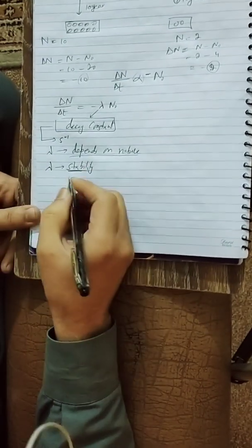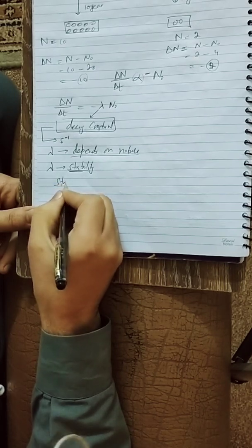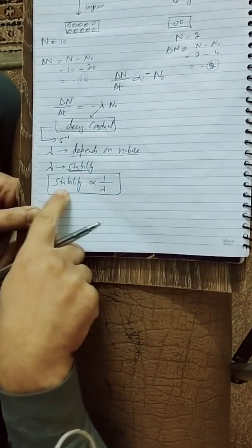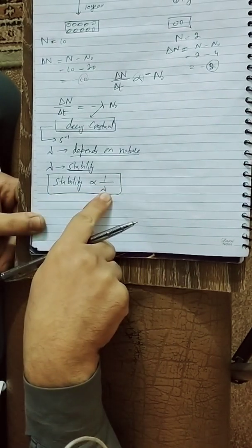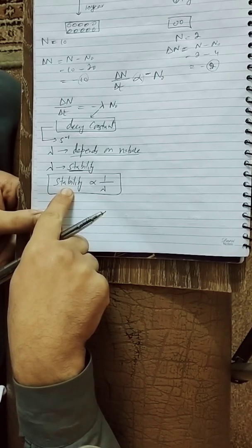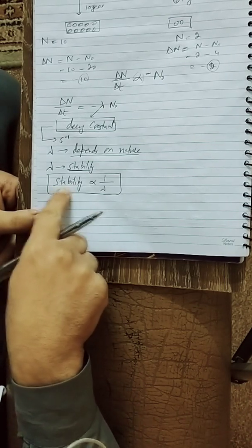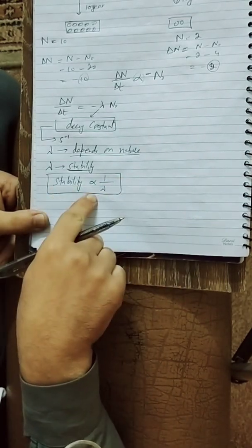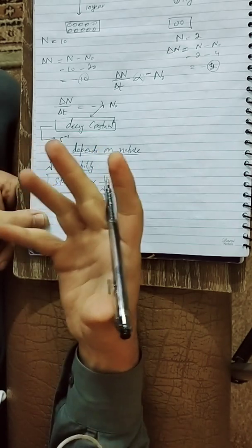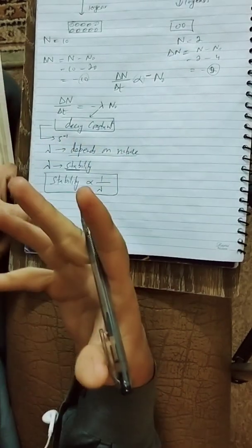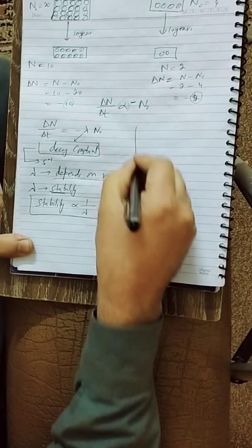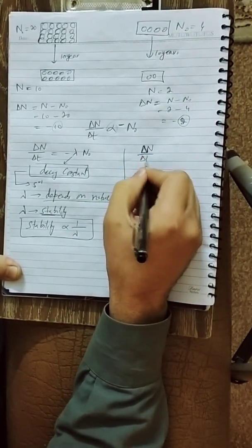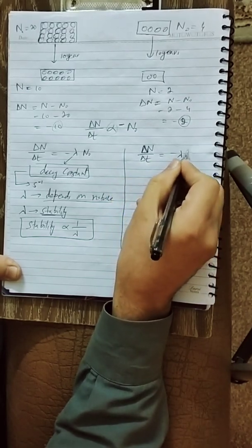The relationship between lambda and stability: if a sample is more stable, its value of lambda will be smaller. If the sample is less stable, the value of lambda will be greater. So lambda and stability are inversely proportional. The equation is: ΔN/Δt = −λN₀.